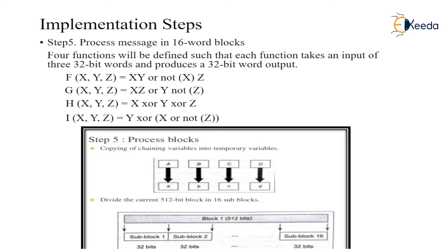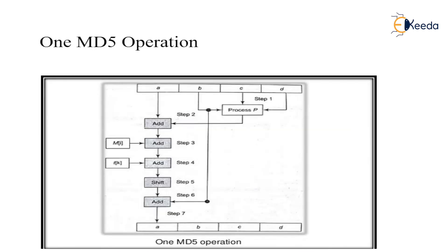The functions perform copying and changing of variables into temporary variables, along with shifting of blocks to produce the final output. This is one MD5 operation wherein A, B, C, D are the four words undergoing the digest functionalities: step 1 processing, step 2 through step 5 addition processes, and at step 7 producing 32 bits each for the four blocks.